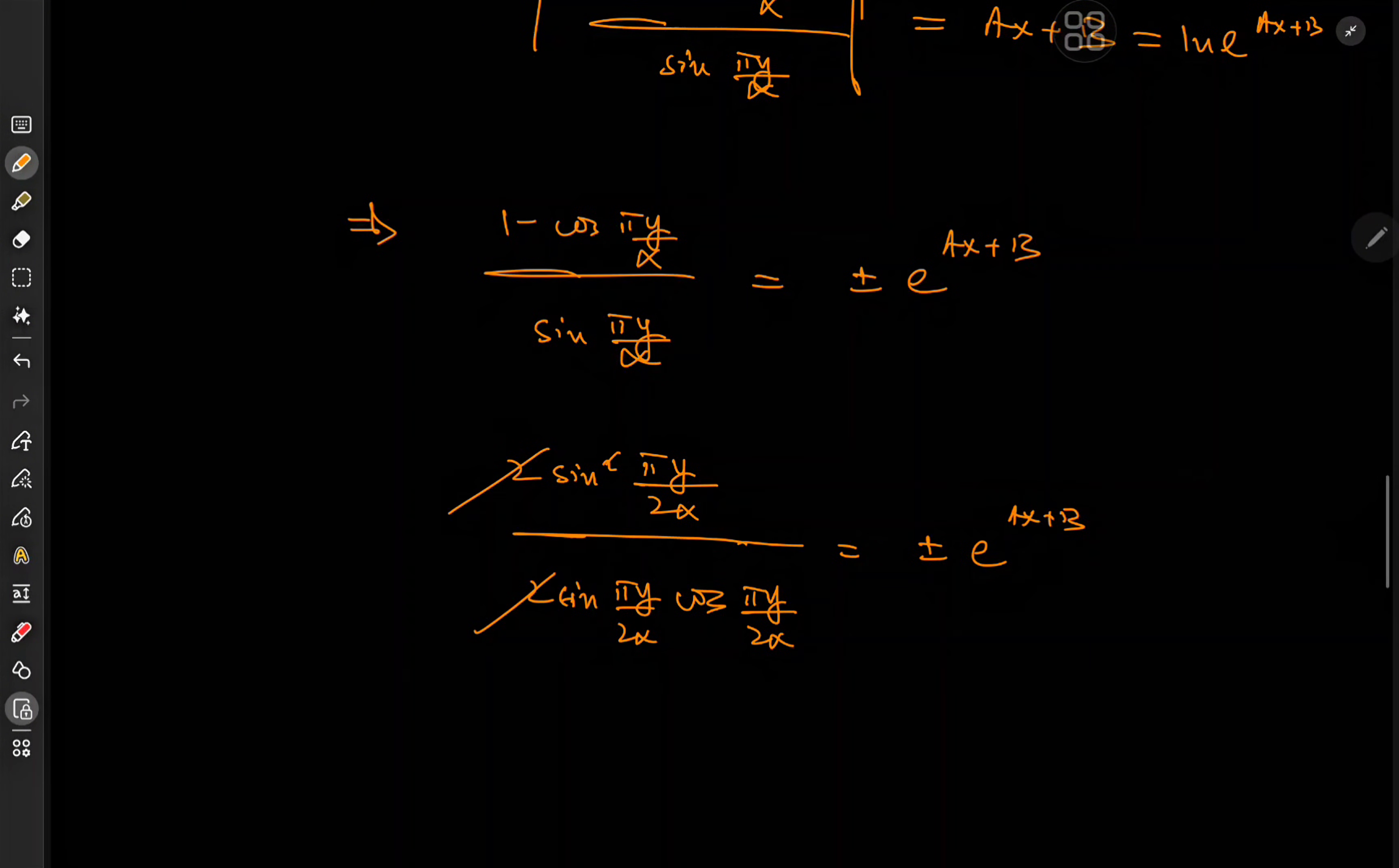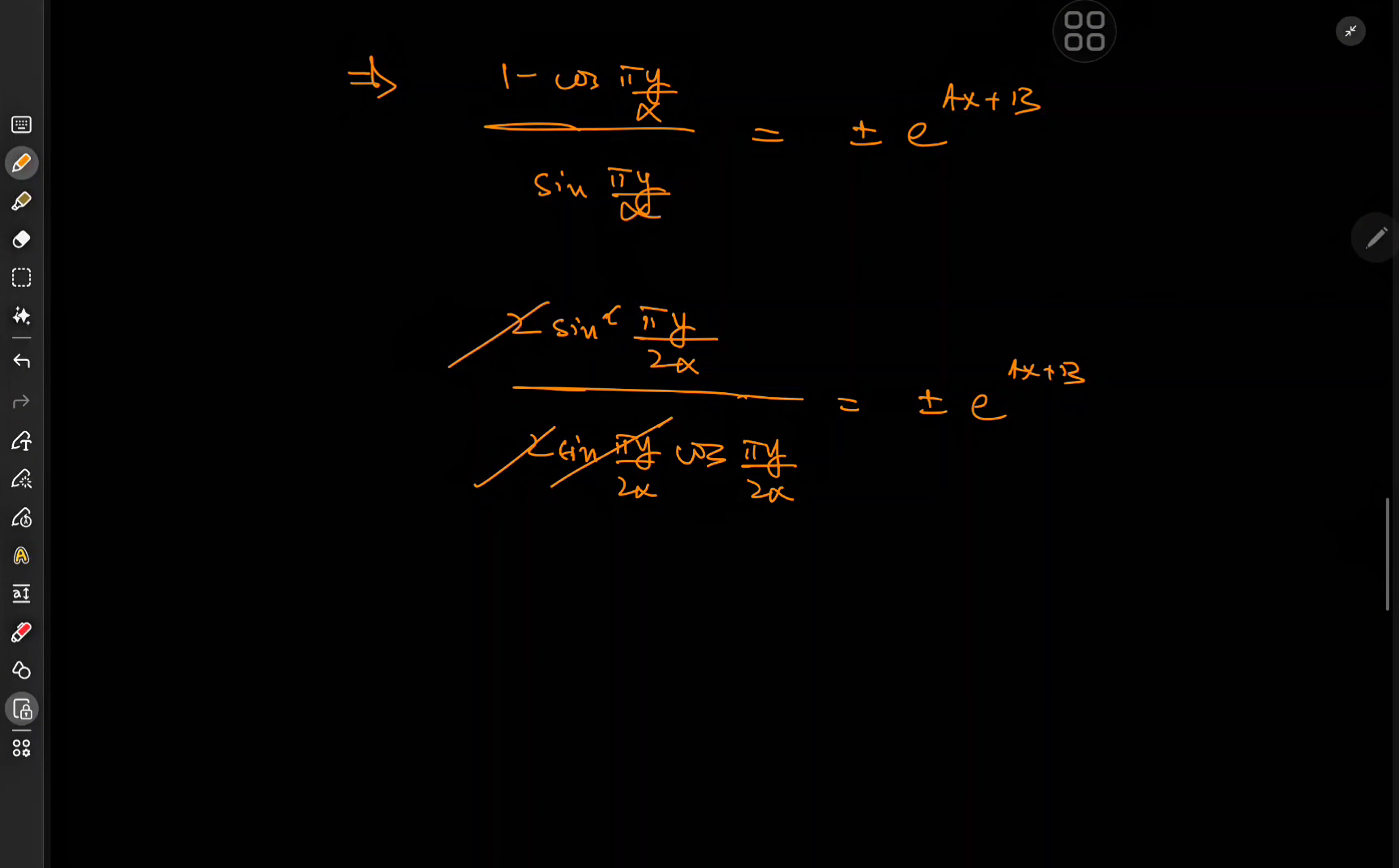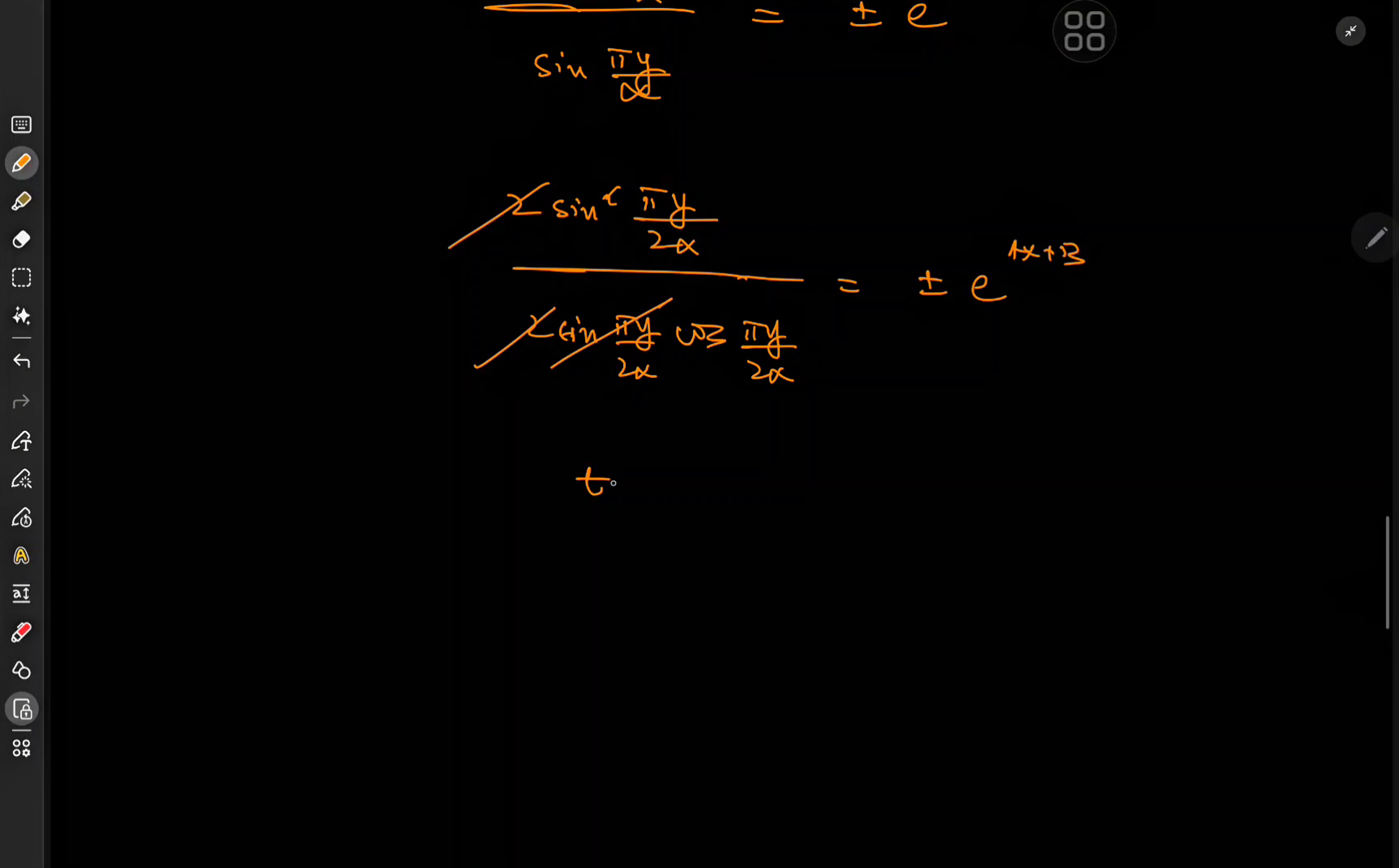So up top we have 1 minus cosine. 1 minus cosine is proudly equal to 2 sine squared of half the angle. So we have pi y over 2 alpha. In the denominator, I can expand this via the double angle formula as 2 sine pi y over 2 alpha times the cosine of pi y over 2 alpha. And on the right I still have plus or minus e to the ax plus b. And that means I can cancel out the twos here and there. So there goes a sine term. We have sine over cosine, which is tangent. So we have tangent of pi y over alpha equal to plus or minus e to the ax plus b. And the good news is that